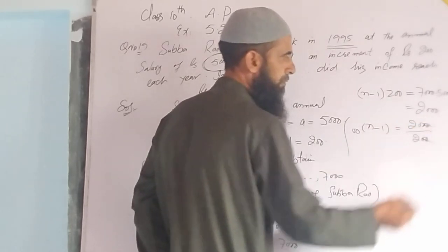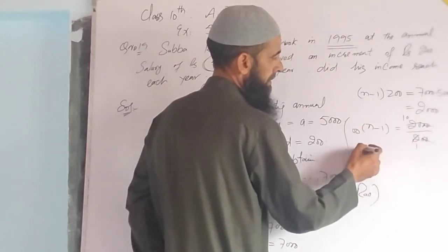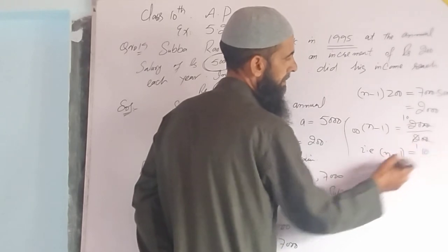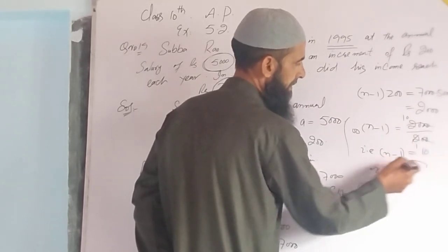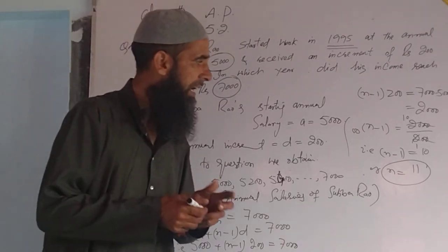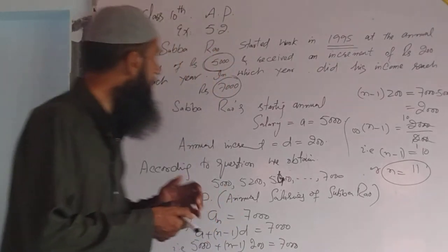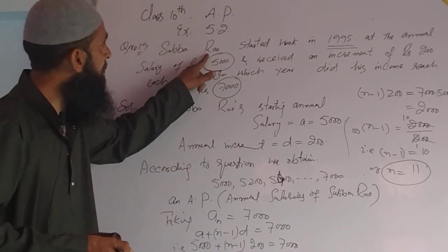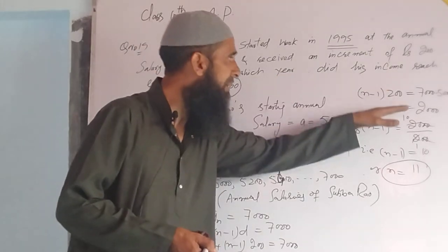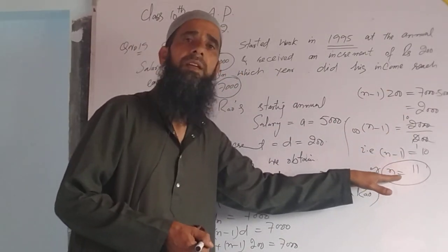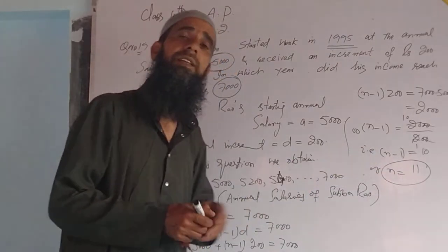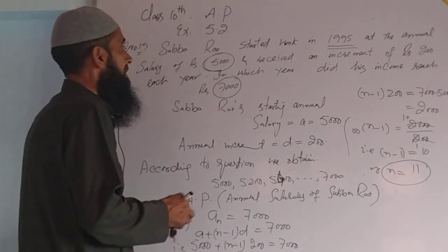The two zeros cancel, giving N minus 1 equals 10, or N equals 11. Therefore, the salary becomes 7000 in the 11th year.